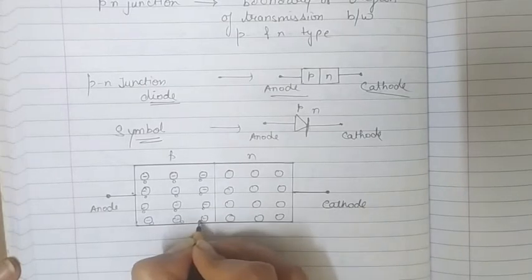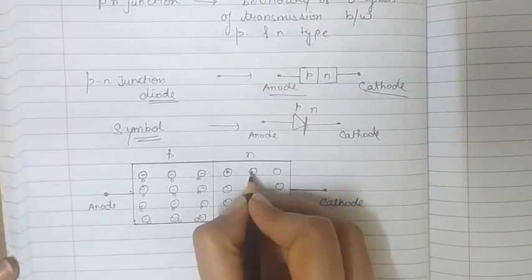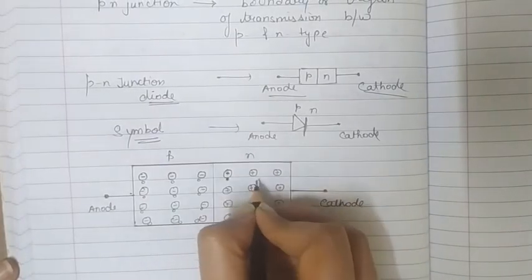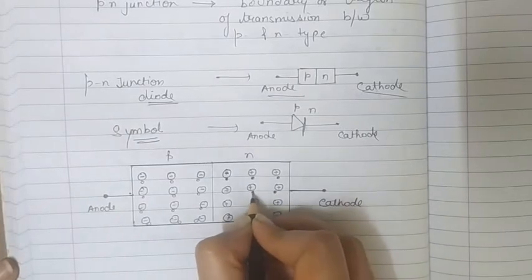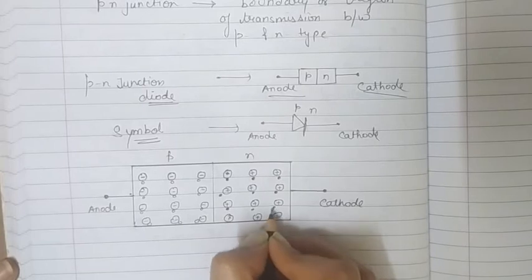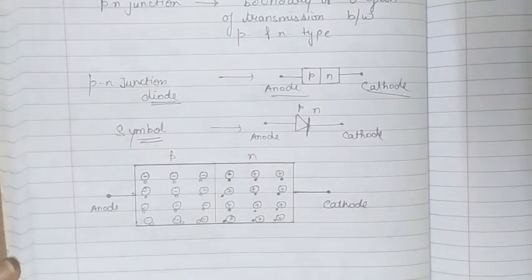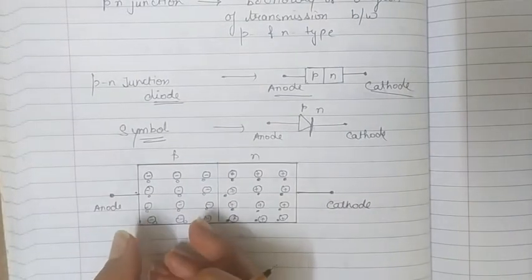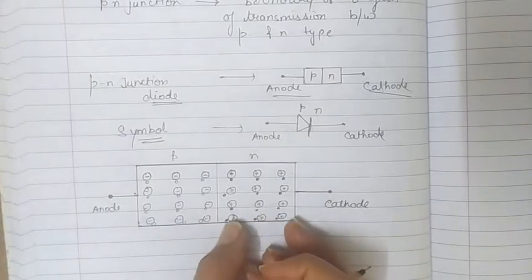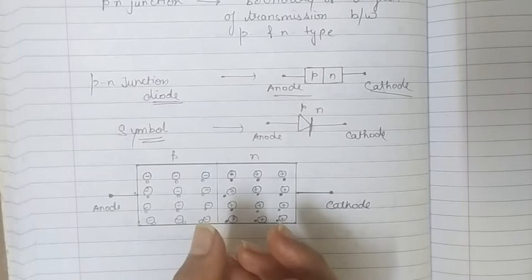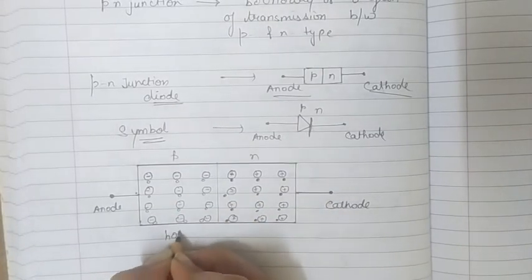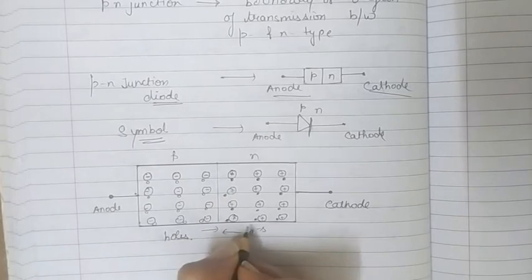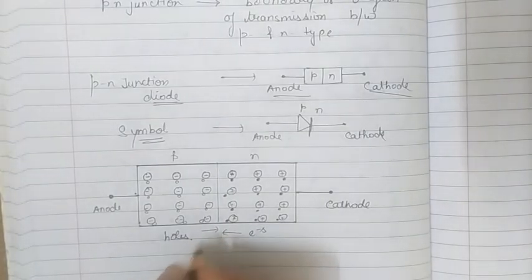In case of the n-type semiconductor we have donor ions and free electrons with them — dots represent electrons and circles represent holes. We know the process of diffusion, in which particles move from higher concentration to lower concentration. In the p-section the concentration of holes is more than that of electrons, while in the n-section the concentration of electrons is more. So holes from the p-section and electrons from the n-section start diffusing — holes towards n-type and electrons towards p-type.